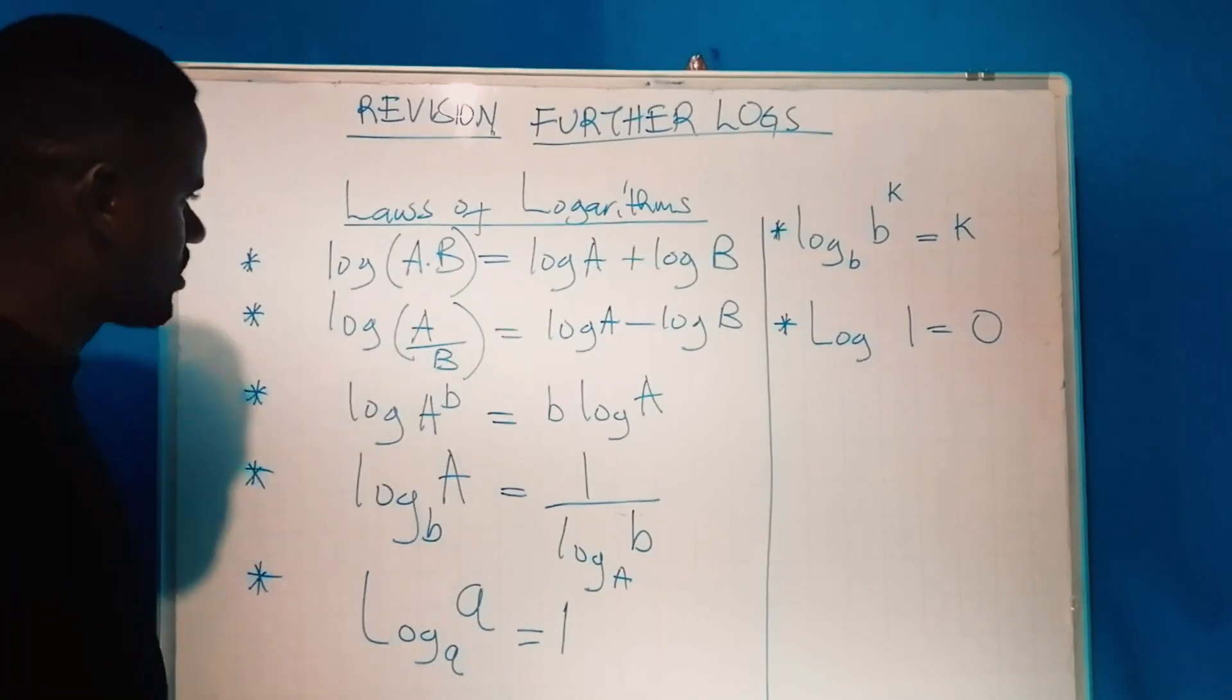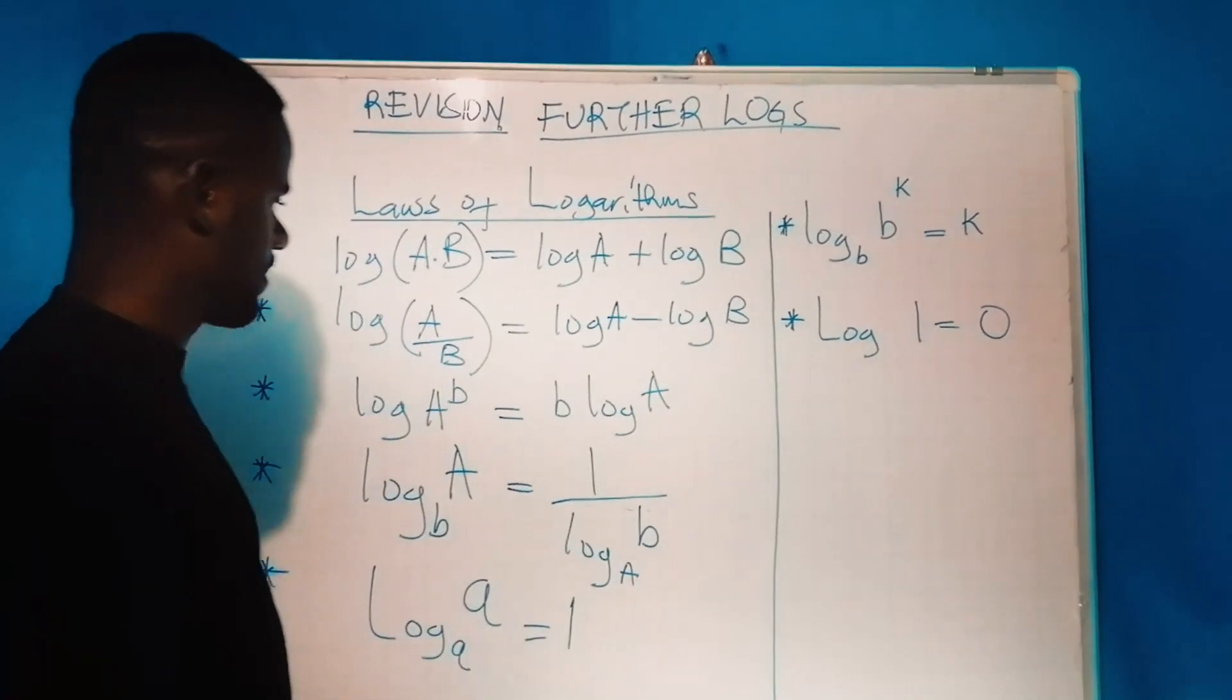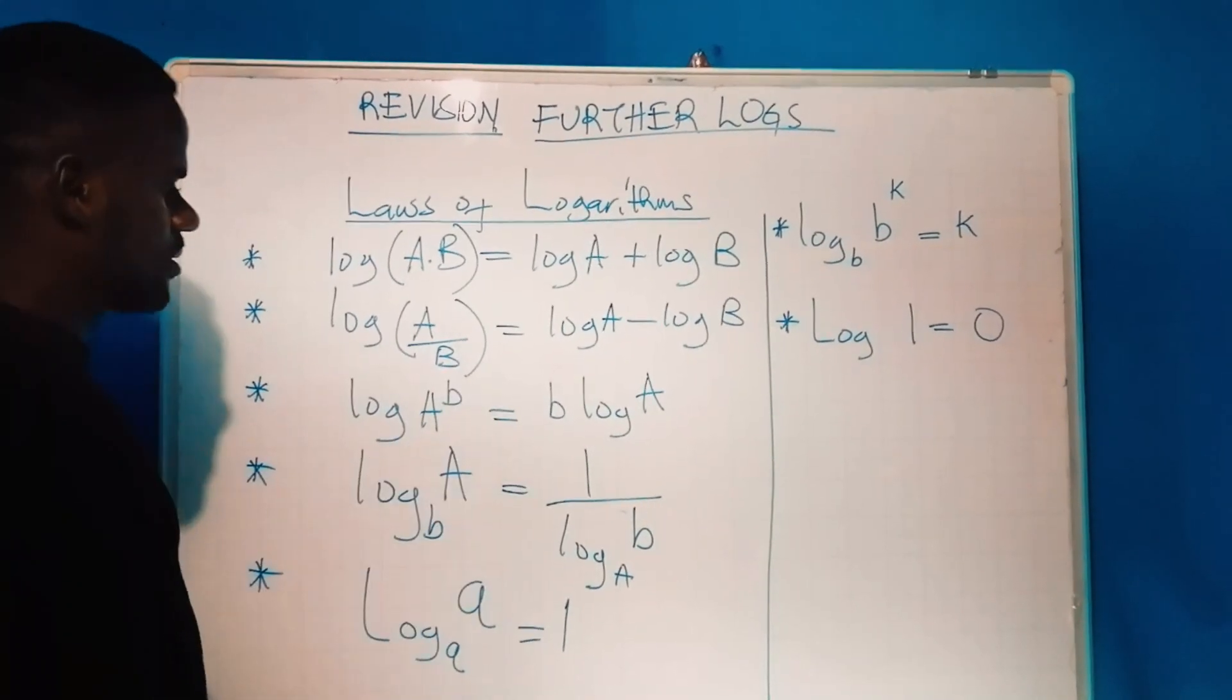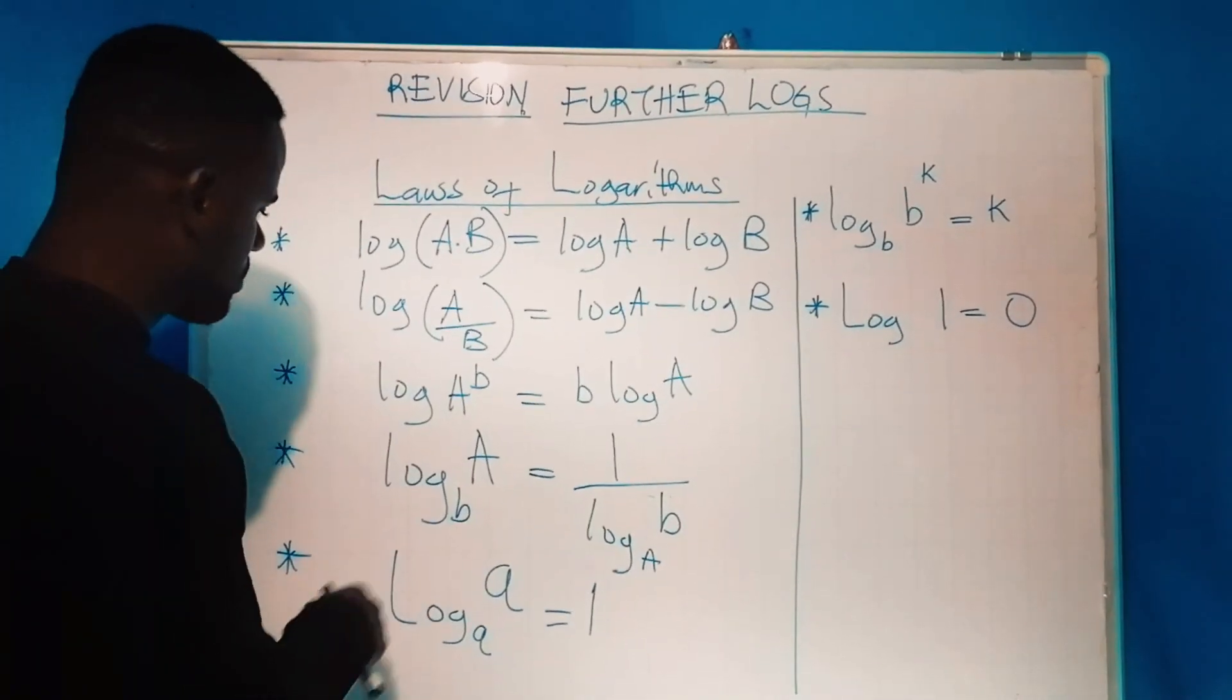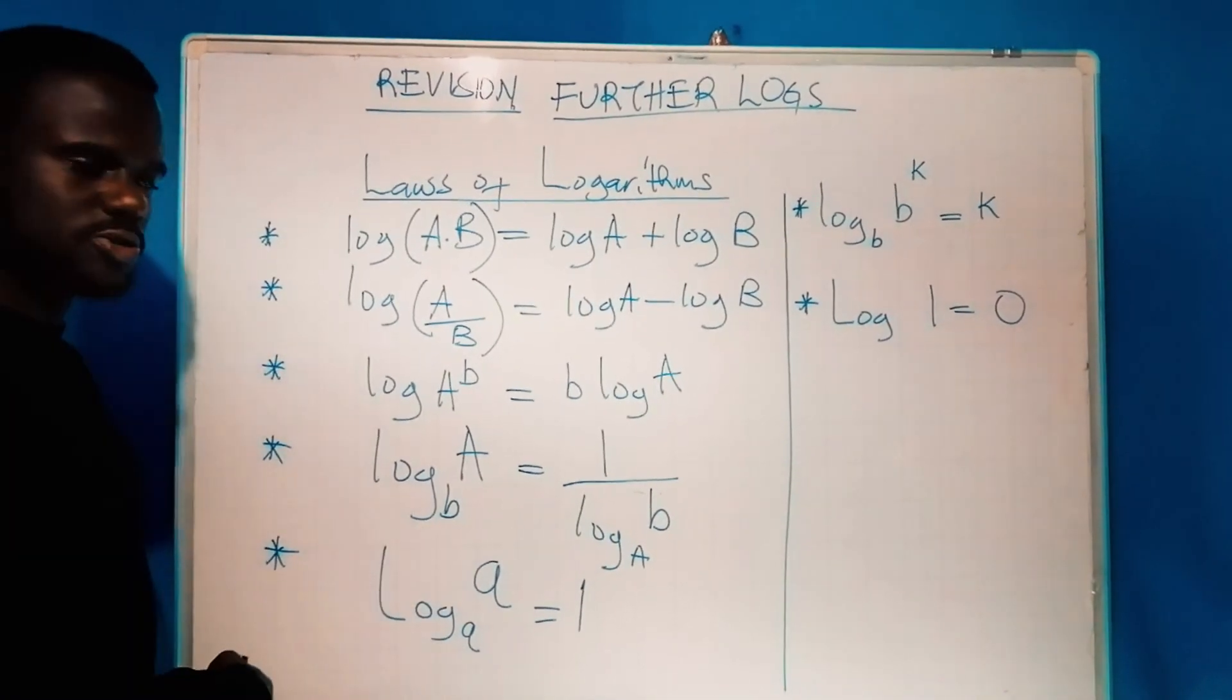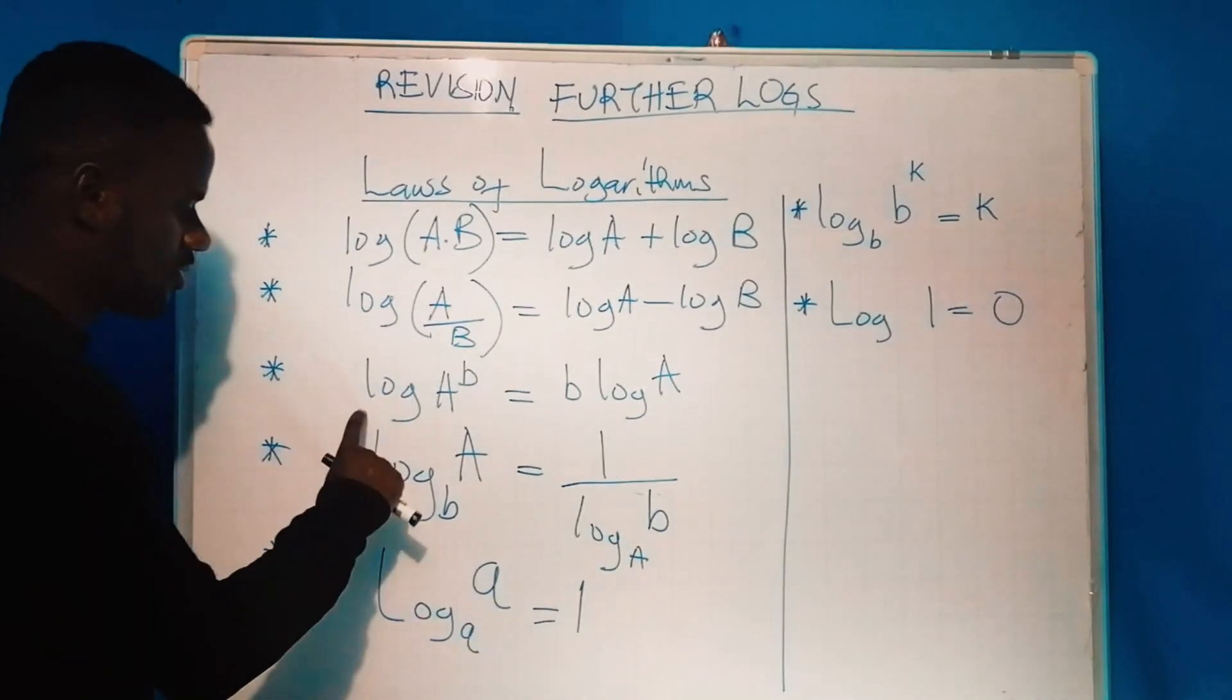in brackets is equivalent to log of a minus log of b. We also have log of a to the power b, which is written as b times log of a. Then log of a to base b can be written as one over log of b to base a. Take note of this.